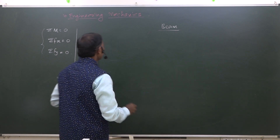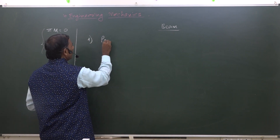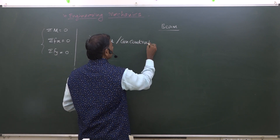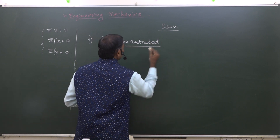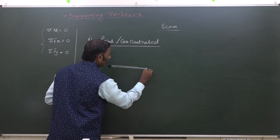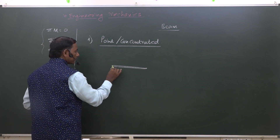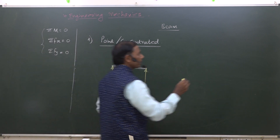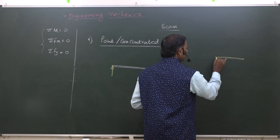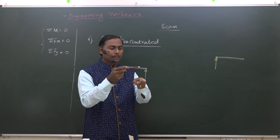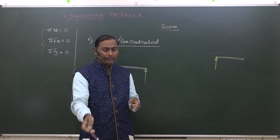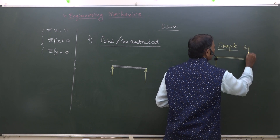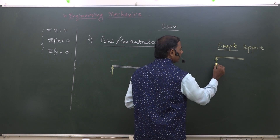Now let us go to the second type — types of loads. The first type of load is called a point load or concentrated load. One more type of support to note is simple support, wherein the beam is simply kept on a column or beam support. This type of support has only one reaction, which is always vertical and perpendicular to the beam.